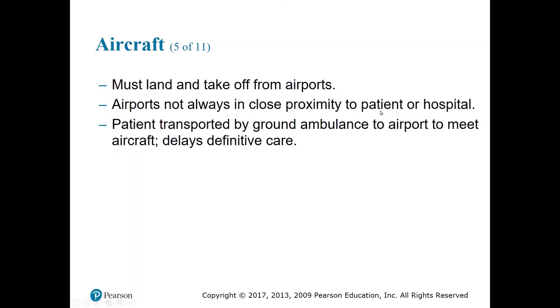Most airports aren't in close proximity to hospitals, so these transports are scheduled ahead of time. A ground critical care ambulance team drives to the landing area, picks up the crew and equipment, drives them to the facility, picks up the crew and patient, returns to the landing zone, and then the aircraft flies to the destination — where another ambulance crew offloads them and brings the crew back. Ground transportation is still required, making it time-consuming.